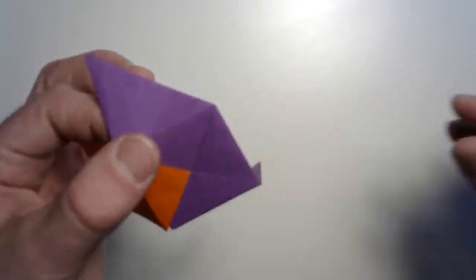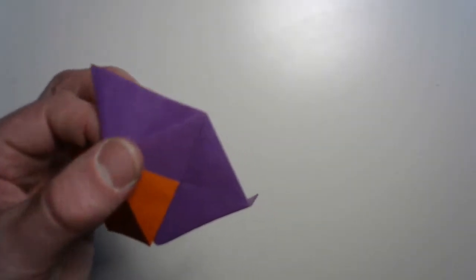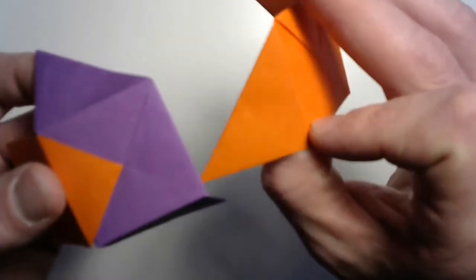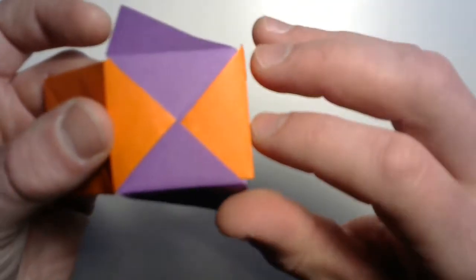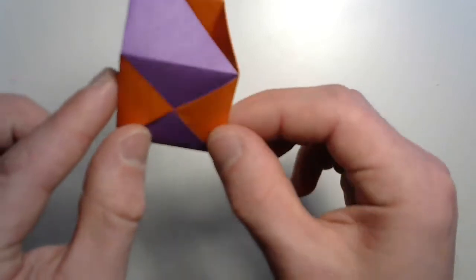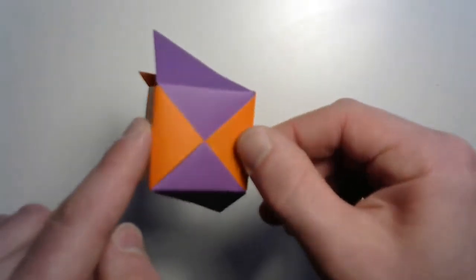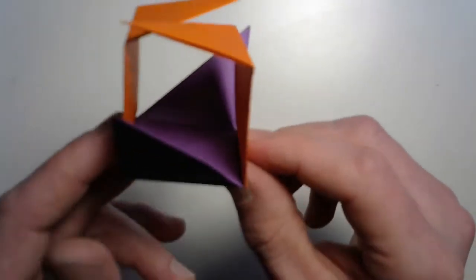And then take another one, maybe a different color or an opposite color or if you're using the same color. And we're going to put that one in on the opposite side. So now you can already see one face of your cube. And we've got to build the rest in there.